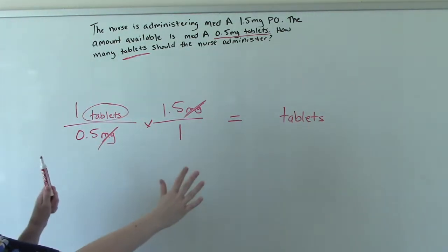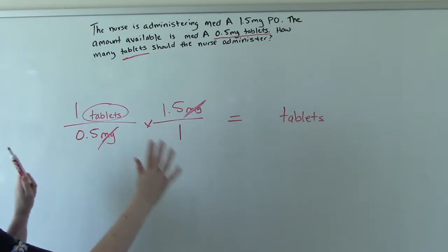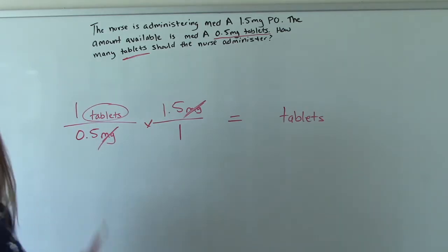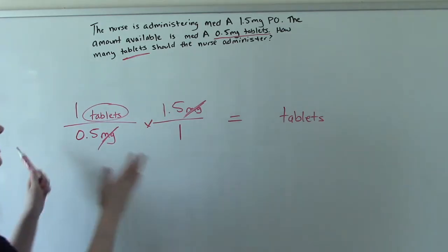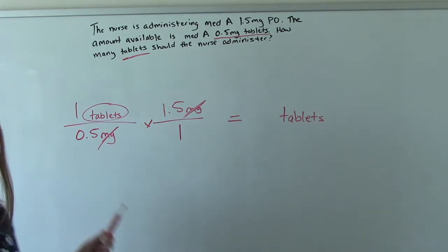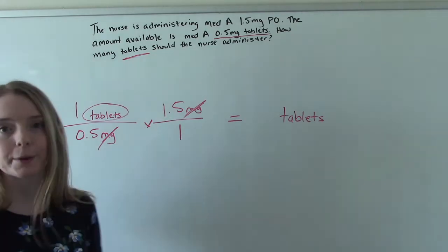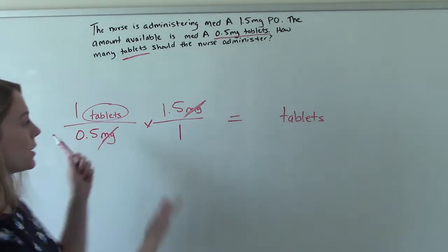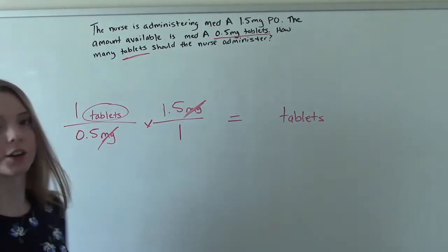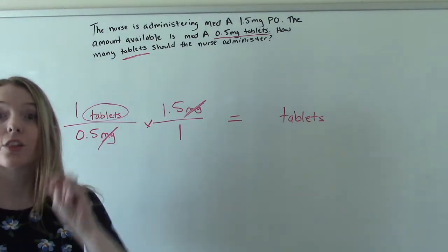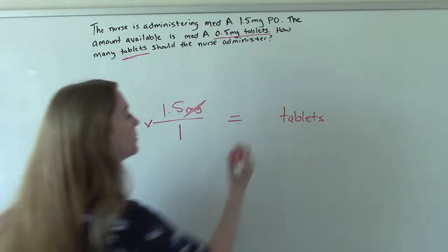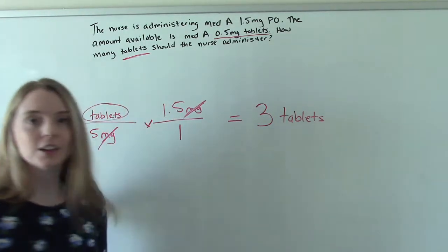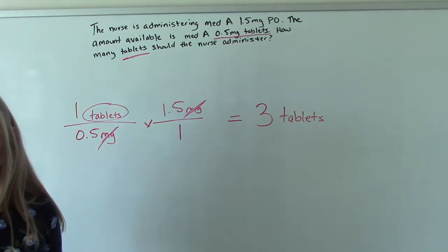Setting it up like this is going to be the easiest way for you to figure this out. Then the next step just involves punching these numbers into your calculator — or this one you can even do in your head. It's 3. So 3 tablets.